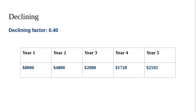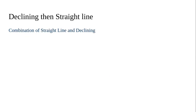The third method is Declining and Straight Line, which is a combination of both. From the start, depreciation is calculated by multiplying with the declining factor — the same as the declining method — and when it reaches a linear value, it switches to follow the straight line method.